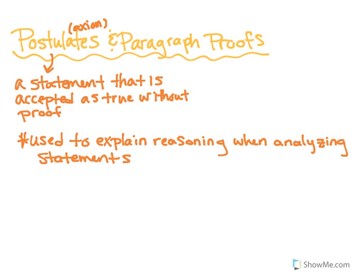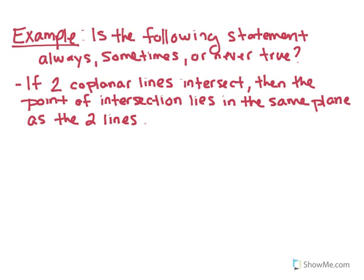Let's take a look at an example. We're going to ask: is the following statement always, sometimes, or never true? The statement is: if two coplanar lines intersect, then the point of intersection lies in the same plane as the two lines.